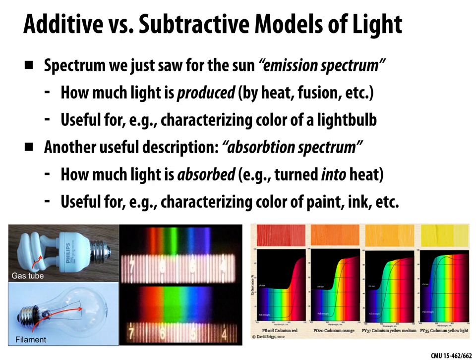If we talk about paint, we want to talk about the color of the paint. But paint is not emitting any light, so we need to talk about a different kind of spectrum — an absorption spectrum. An absorption spectrum says: for each frequency, if I shine white light on it, what fraction of that light is absorbed? When light is absorbed, it hits the paint and rather than being scattered back off, it might be turned into heat — it starts particles in the paint jiggling, turning into kinetic energy. An absorption spectrum is useful for characterizing the color of paint, ink, and so on.